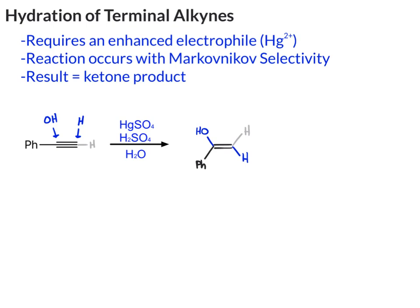We then need to tautomerize. In the tautomerization, we go from the double bond to the single bond. We still have the hydrogen, and in fact, when you go through the mechanism, you end up adding another hydrogen to that side. And the OH becomes a double bond O. We would normally not draw in all those hydrogens, and more neatly could just draw it like this. And that product is, of course, a ketone.